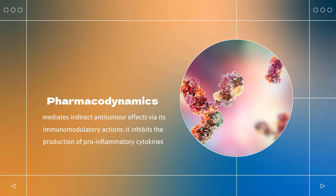Pharmacodynamics: Lenalidomide mediates indirect antitumor effects via its immunomodulatory actions. It inhibits the production of pro-inflammatory cytokines, which are implicated in various hematologic malignancies. Lenalidomide enhances host immunity by stimulating T-cell proliferation and enhancing the activity of natural killer (NK) cells. Lenalidomide is about 100 to 1,000 times more potent in stimulating T-cell proliferation than thalidomide. Due to its anti-inflammatory properties, lenalidomide has been investigated in inflammatory and autoimmune diseases, such as amyotrophic lateral sclerosis.